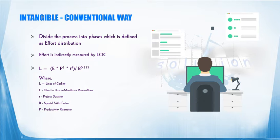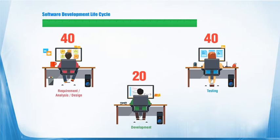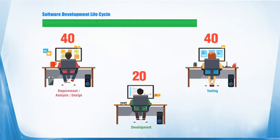He says: L equals E into P cubed into T to the power 4, divided by B to the power 0.333. This formula has a lot of derivations, but at this point of time we need not go in-depth into those derivations. In addition to this mathematical formula, Roger Pressman also gave a model of software development lifecycle, which he terms as the 40-20-40 model. He says 40% of your entire efforts in software should be dedicated towards requirements, analysis of those requirements, and designing. 20% should be dedicated towards development and another 40% towards testing.